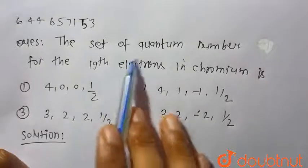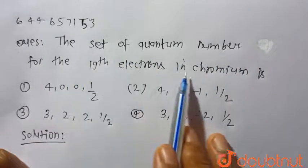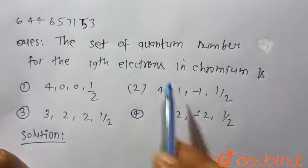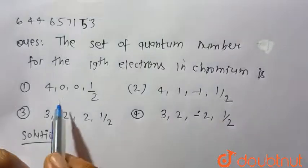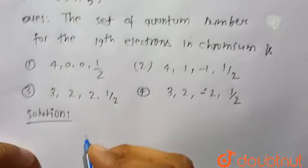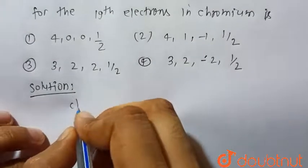Hello everyone, consider the given question: the set of quantum numbers for the 19th electron in chromium. Four options are given, so we have to find which one is correct.